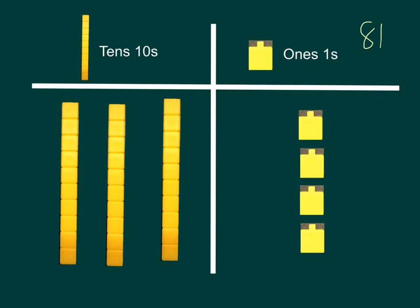What number do these base 10 blocks represent or show? Pause video. You're right. On our mats, we built the number 34. We know this because when I look, there are 3 tens and here I see 1, 2, 3 groups of 10 or 30 and 4 ones: 1, 2, 3, 4 or 4. So 3 groups of 10 plus 4 ones makes the number 34.